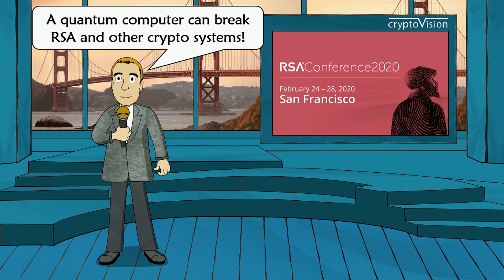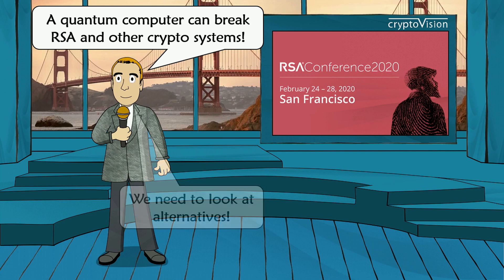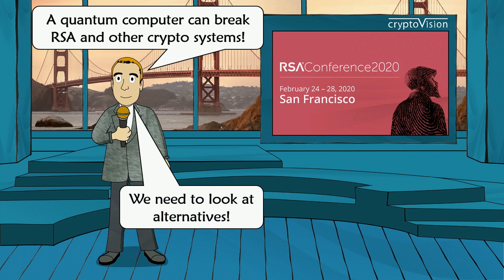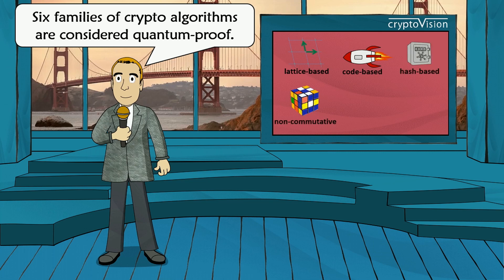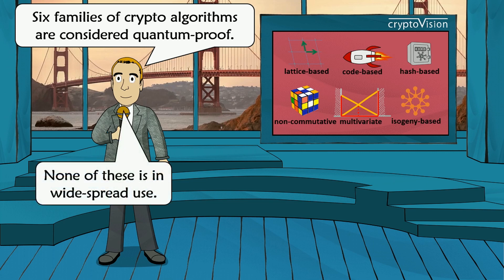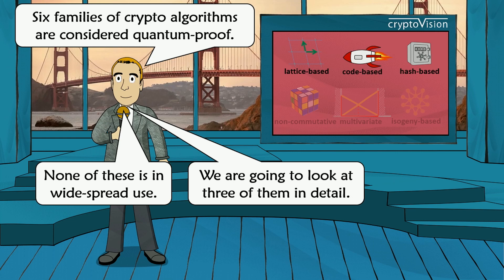Let's come back to quantum computers. A quantum computer can break RSA and other crypto systems pretty efficiently. So we need to look at alternative crypto systems. At the moment, mainly six families that are believed to be quantum computer proof exist: lattice-based encryption systems, code-based encryption systems, hash-based encryption systems, non-commutative systems, multivariate systems, and isogeny-based systems. None of these systems is in widespread use today, but this might change if quantum computers become more powerful. We will limit ourselves to the top three.